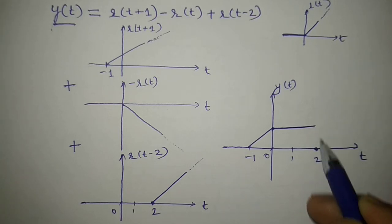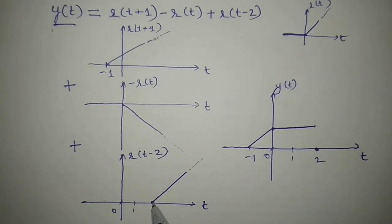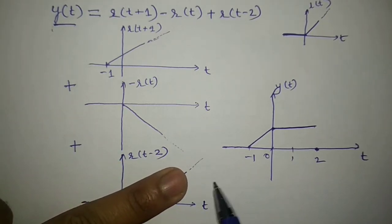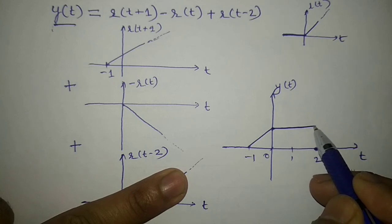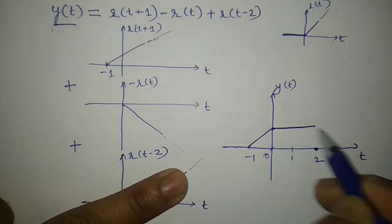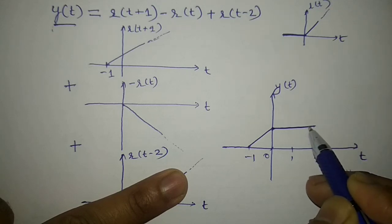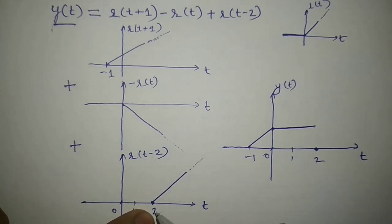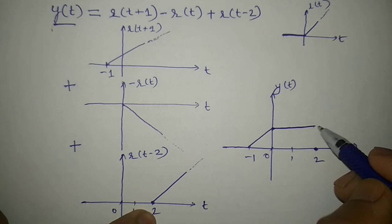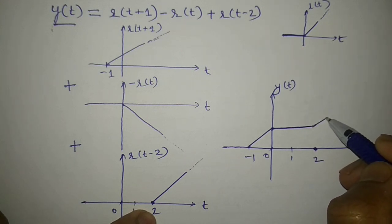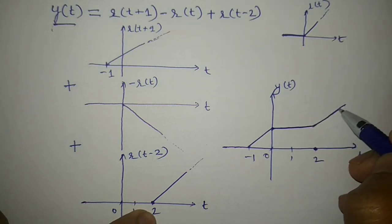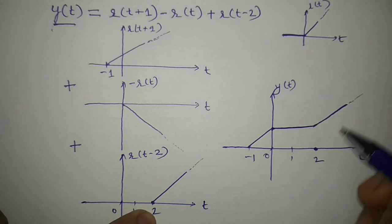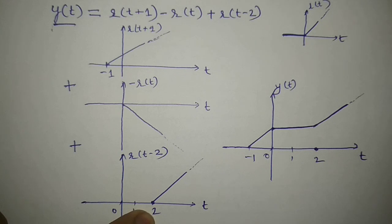At t equal to 2, I get one more signal r(t-2) which is trying to increase. Without it, the signal would have stayed at its flat level forever. But with r(t-2) added at t equal to 2, the result is that the signal increases forever from that point. This is indicated with dashed lines showing the signal rising. This is how the final signal y(t) looks.